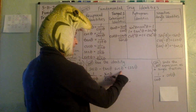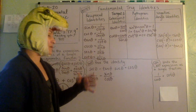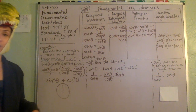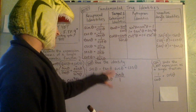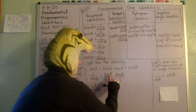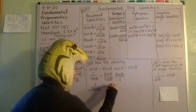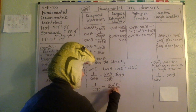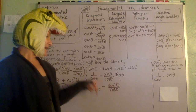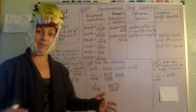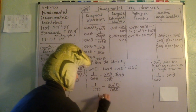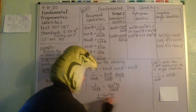The sine term I'll rewrite as sine theta over one. Now we have one over cosine minus sine times sine over cosine — that's one over cosine minus sine squared over cosine. Since both fractions share the same denominator, we can combine them into one fraction: one minus sine squared theta, all over cosine.